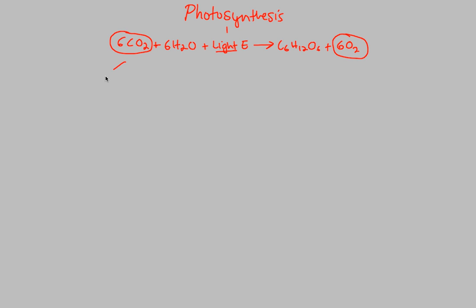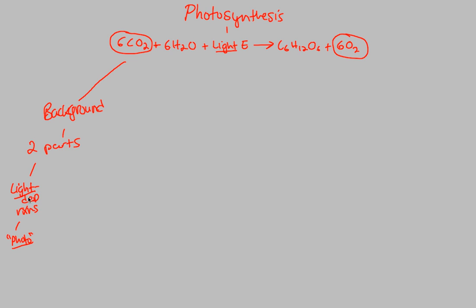Now some brief background on photosynthesis. The process itself has two parts. There are the light-dependent reactions — from this point forward called LDRs. This is the photo part of photosynthesis, because this is the part that involves light. The LDRs specifically occur in the thylakoid membranes.